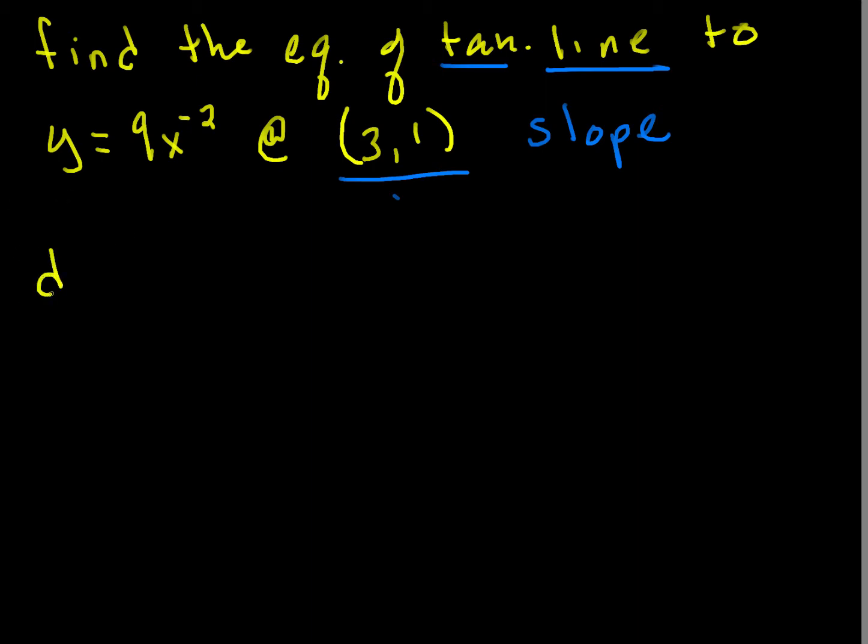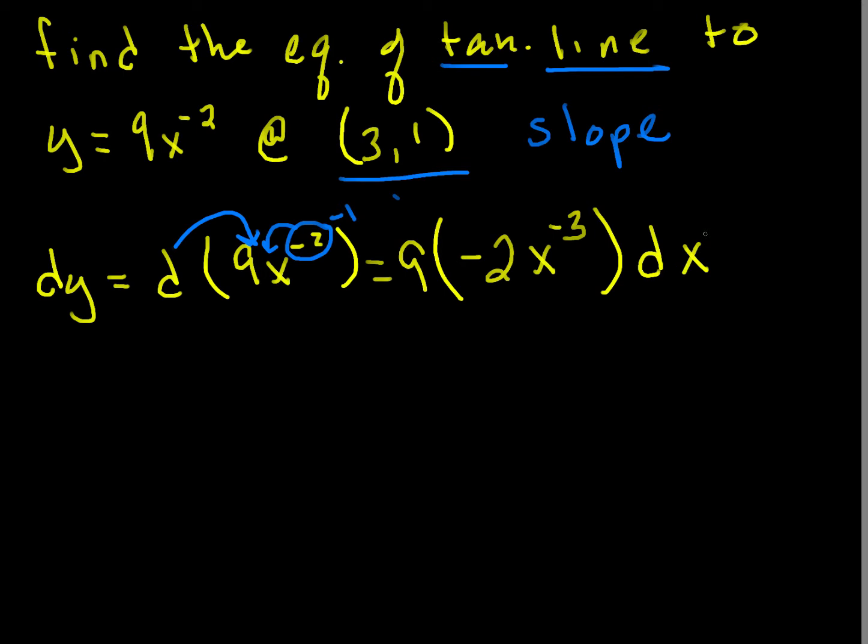So, let's compute the differential of y. It is the differential of 9x to the minus 2. And the differential will slide past the 9. So, that's the constant rule. Then, we're going to have a power rule. So, this will come down, become my new coefficient there. And I'll subtract 1. So, following that rule, this is equal to 9 times the quantity negative 2x to the minus 3 dx. And I've got dx all by itself. So, now, quite easy. dy/dx is equal to this thing divided by dx. So, they cancel. So, dy/dx is simply negative 18x to the minus 3.